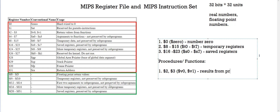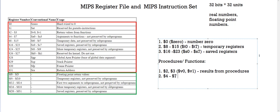We also have argument registers, which store the arguments of a function. These are registers 4 to 7, represented by a0 to a3.